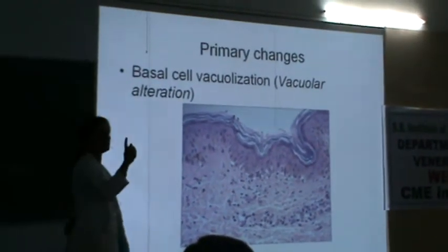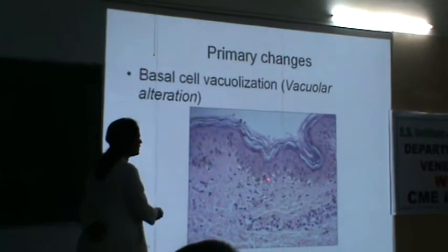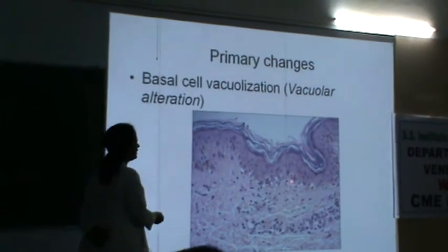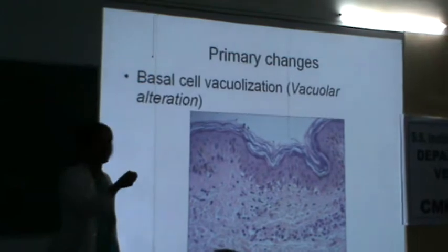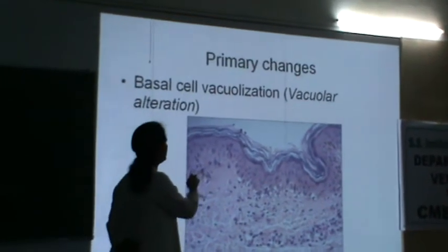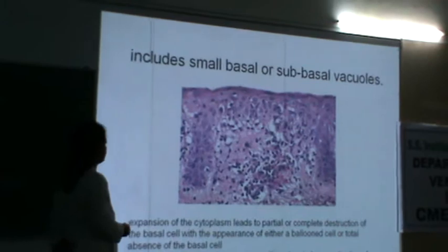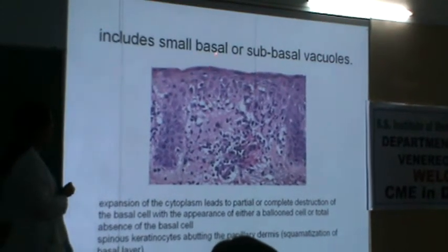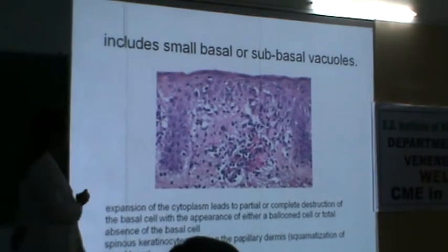Looking at the primary changes: where the basement membrane was seen with a special stain, now you can see the basement membrane has been replaced by spaces — vacuoles. The first thing is basal cell vacuolization — the vacuolar alteration. Vacuolization includes presence of vacuoles in the cells, which could be basal or subbasal. If you see the cells here, the vacuoles are present, the nucleus is up — this is subbasal and basal vacuolization. This vacuolar degeneration leads to destruction of the basal layer.